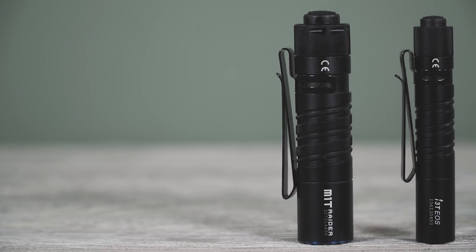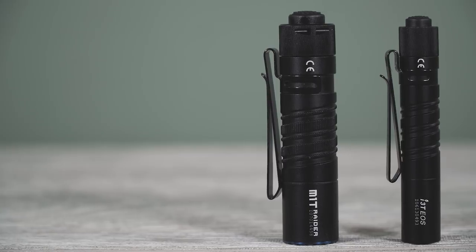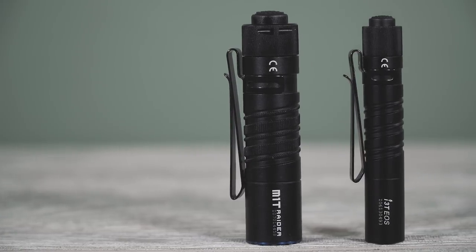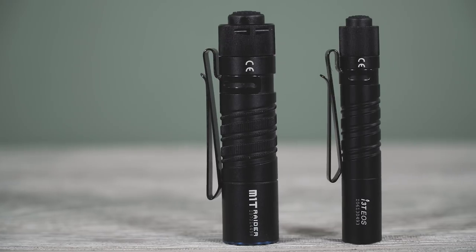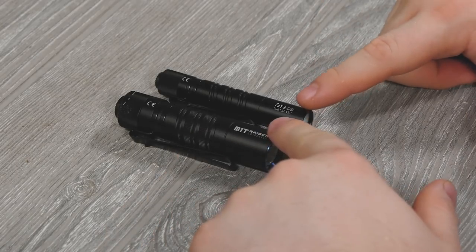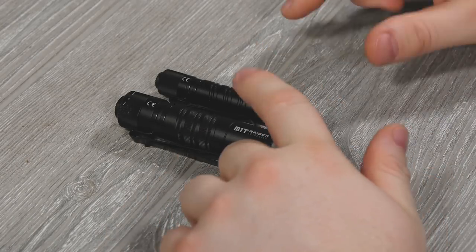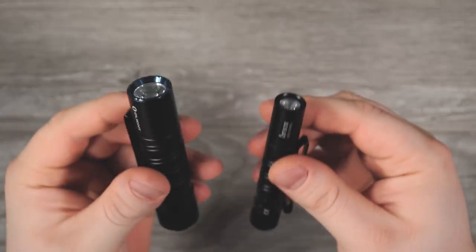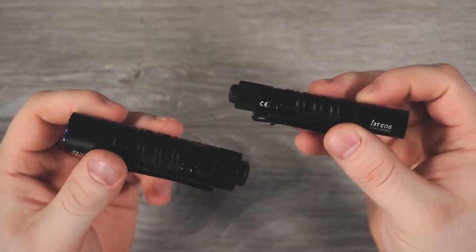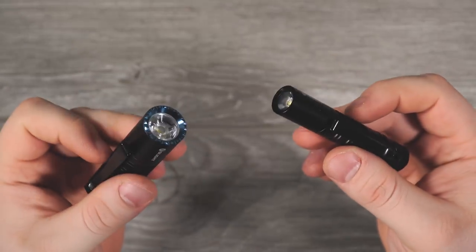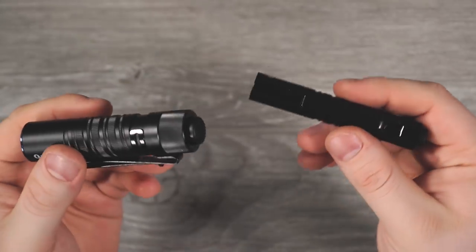You can also tell that they're very similar in length. The i3T is just 3.5 inches long and the M1T is 3.6, that's 89 and 91.5 millimeters respectively. So very similar in length, they are obviously very different in diameter. Both of these flashlights also have TIR optic lenses. They are IPX8 certified for water resistance and 1.5 meter impact resistance rated.